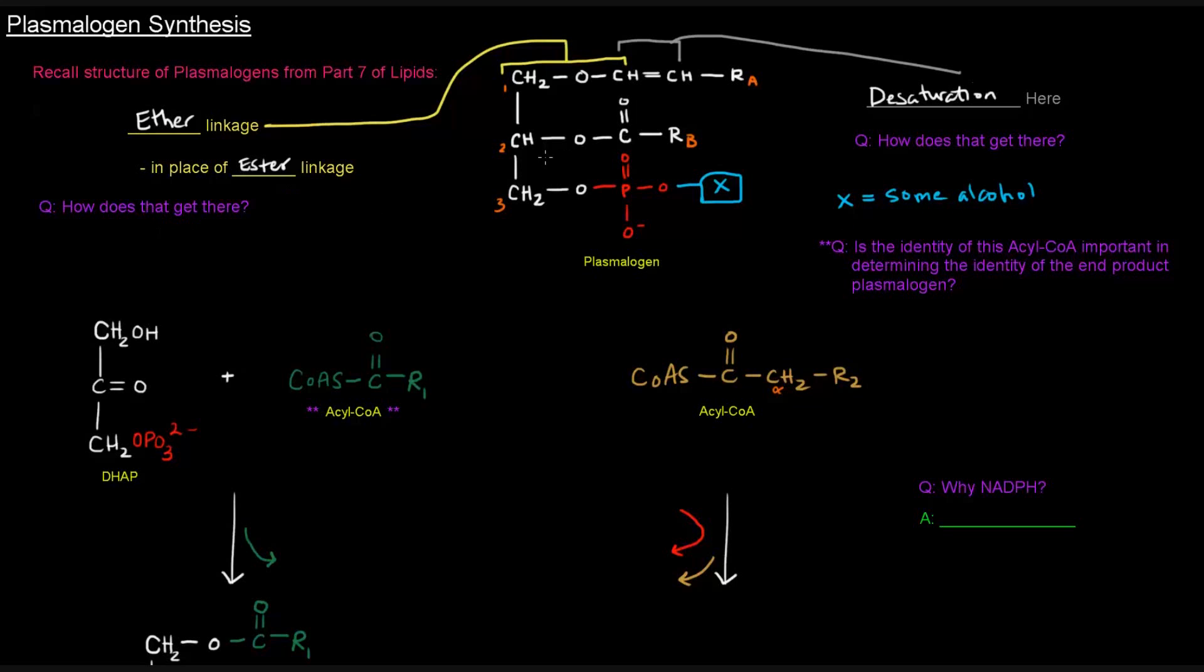Now, the question might be, okay, plasmalogens, they are glycerophospholipids, but they are slightly different because of these two reasons. The question is, how does each of these things get there? How does that ether linkage get there? How does that degree of unsaturation get there? So let's investigate it.